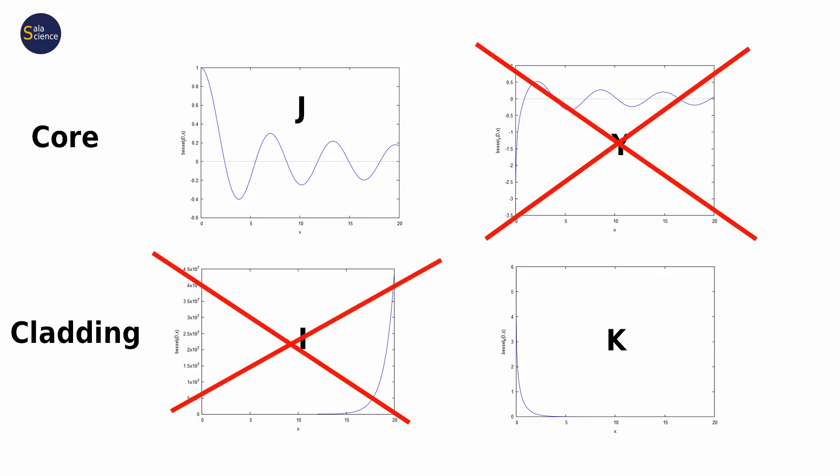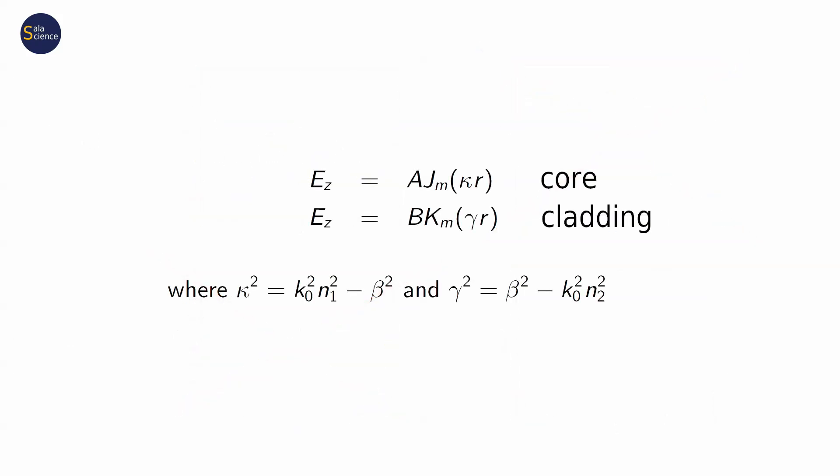So finally, we can say that the longitudinal component of the electric field in the core is described by the Bessel function of the first kind, and in the cladding, by the modified Bessel function of the second kind.